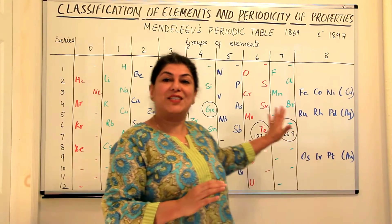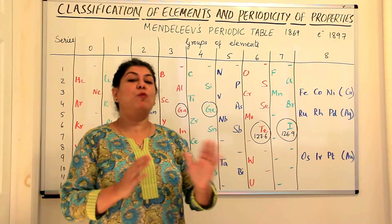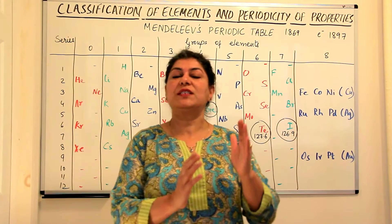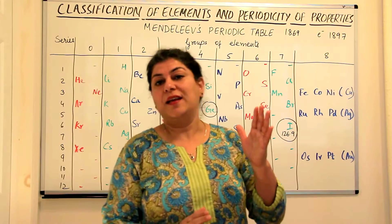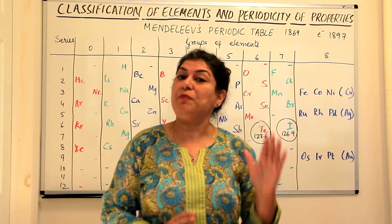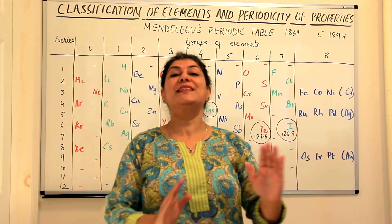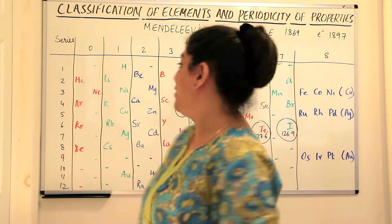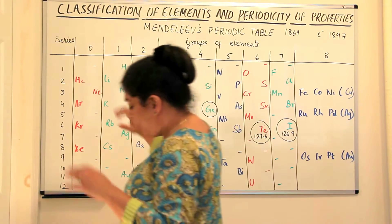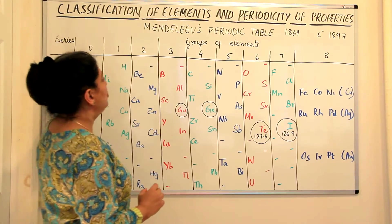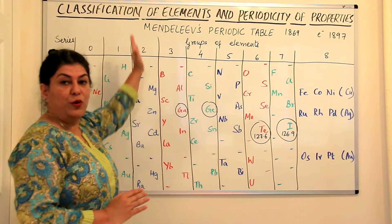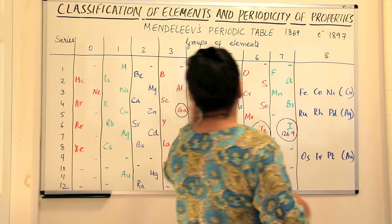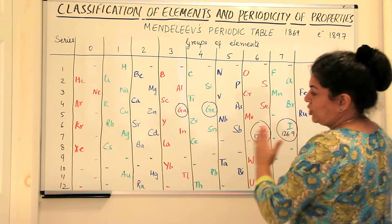Although his table is not accepted today, from whatever prior studies existed, he took a step with such foresight that we can definitely say Mendeleev was the biggest genius in chemistry. He arranged elements into eight vertical rows and twelve horizontal columns, ordering the elements according to their increasing atomic masses.